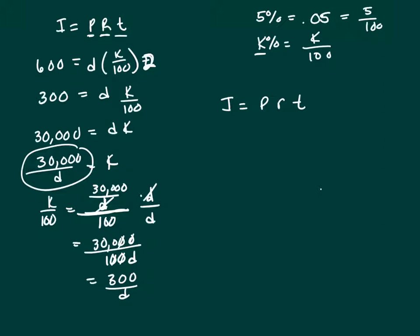In terms of D, what dollar amount invested, so we're trying to find P, invested at the same rate, which is 300 over D, for three years, yields 2,400 in interest. So we're trying to find P.